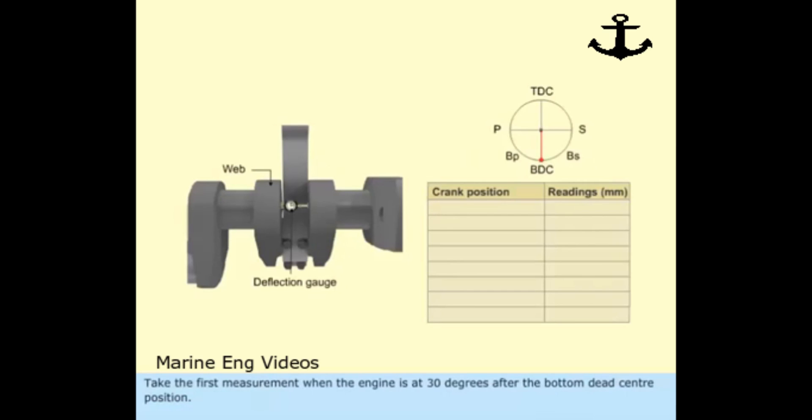Take the first measurement when the engine is at 30 degrees after the bottom dead center position. Keep the gauge close to the side of connecting rod. Set the gauge to zero at this position.